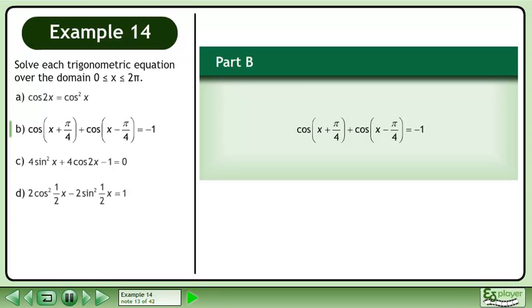In part b, solve cos(2x + π/4) + cos(2x - π/4) equals negative 1.